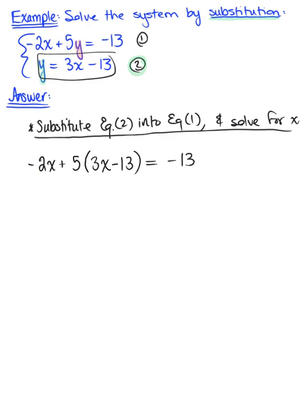Notice we've removed all the y's and we can solve for x. To solve for x, I'm going to take 5 and distribute it through to both terms, which leaves us with negative 2x plus 15x. Five times negative 13 gives us minus 65 equals negative 13. We have two like terms to combine. Negative 2x plus 15x gives us 13x minus 65 equals negative 13.